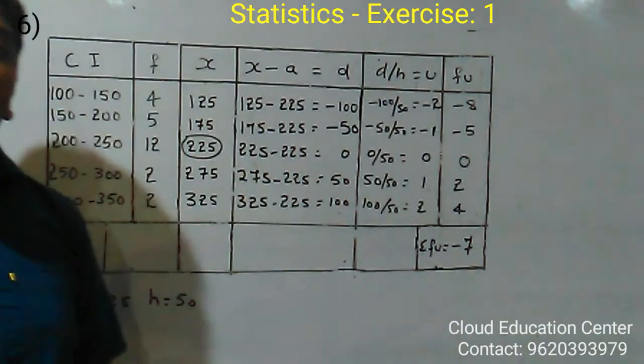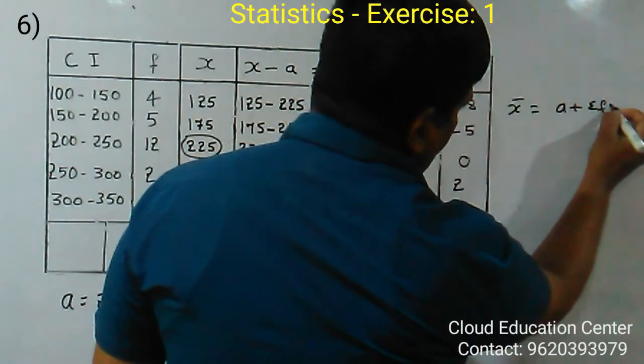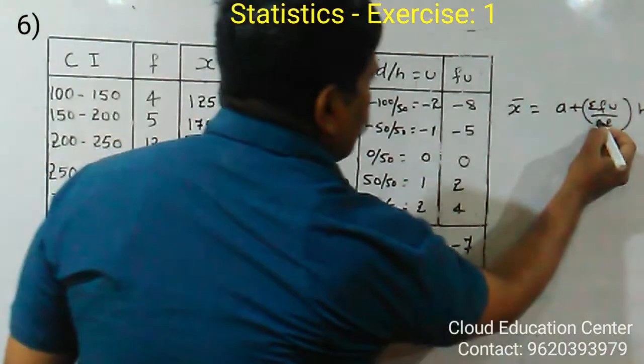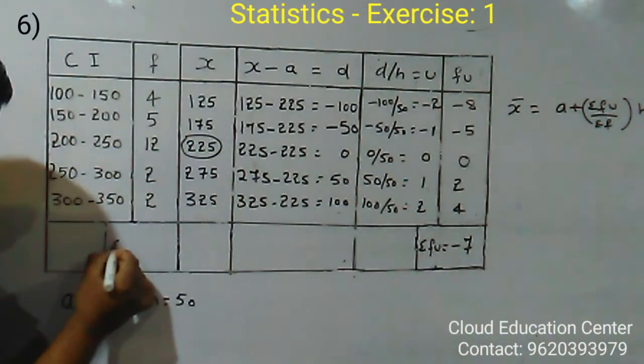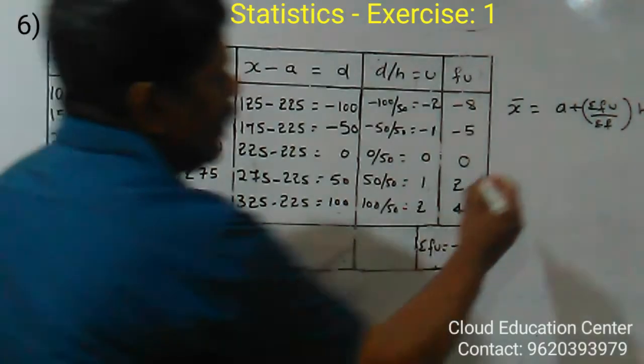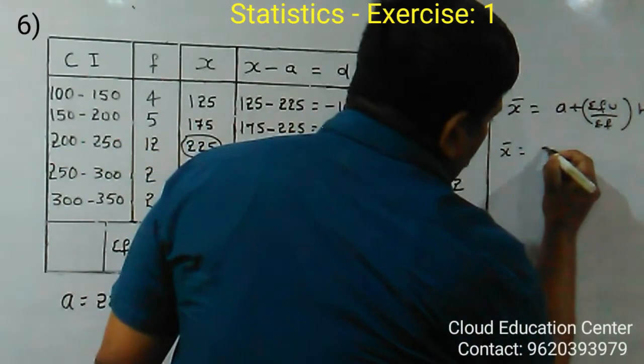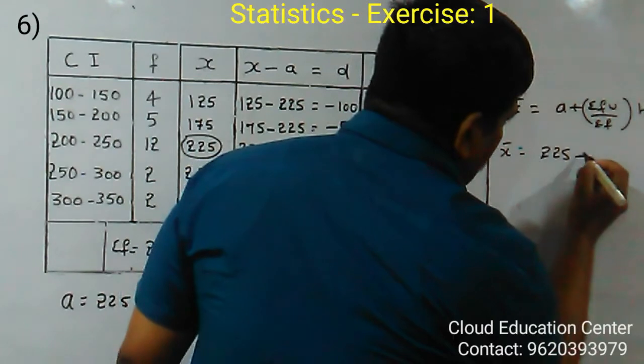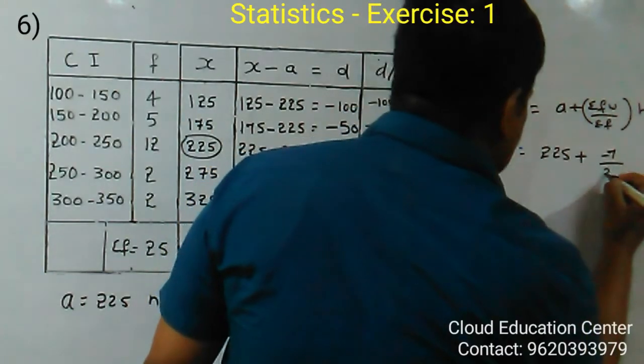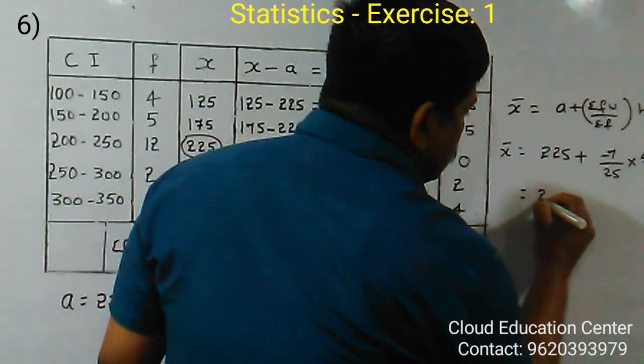Now you know that mean value. The formula is X bar is equal to A plus sigma FU by sigma F into H. Here sigma F is nothing but the sum of the frequency. That is, if you add we are going to get 25. Now X bar is equal to A, we take 225 plus sigma FU is minus 7 by sigma F is 25 into H is 50.